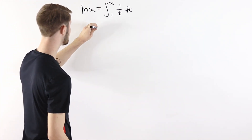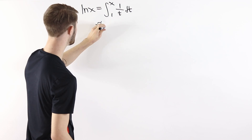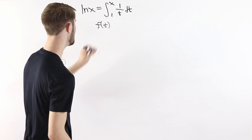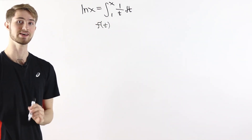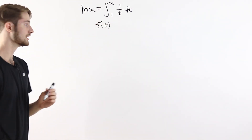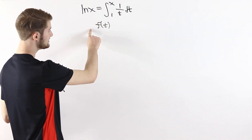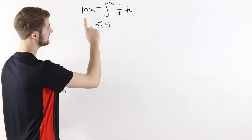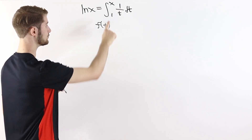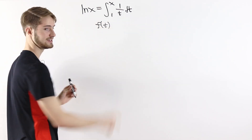We're going to start by considering some arbitrary function f that's an inverse to e to the x, and we'll show that if f is an inverse to e to the x, then it has to equal this integral.